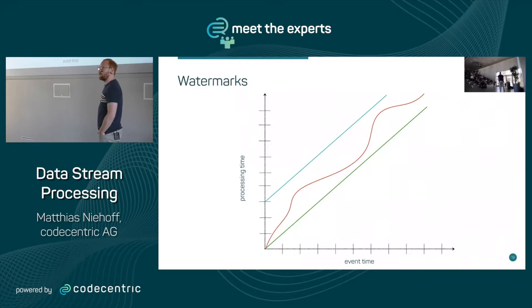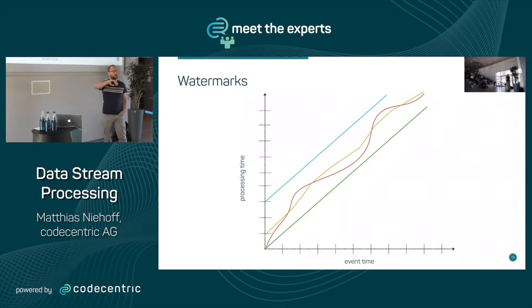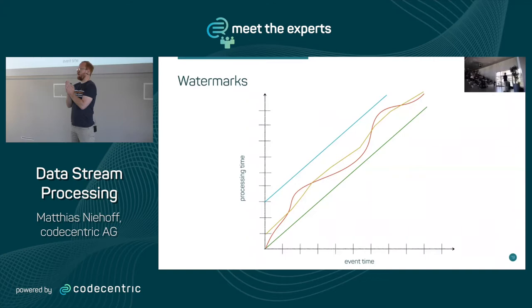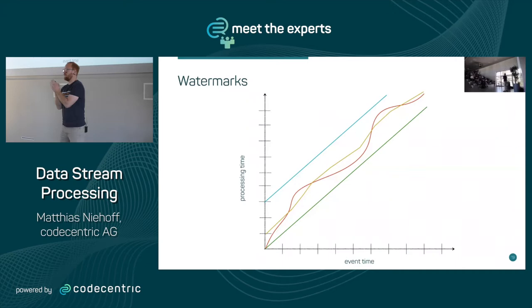One approach is to just process everything three seconds later — a fixed watermark. Another approach is to start with one and adapt to the observed latency of incoming data — a heuristic watermark. A fixed watermark says: three seconds after the event time has passed, I'll assume all data up to that event time has arrived. So at 10 o'clock plus three seconds, I assume all data before 10 o'clock has been seen by the system. That's what a watermark says.